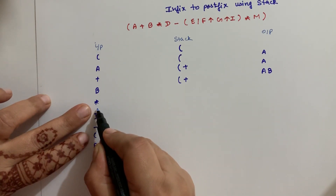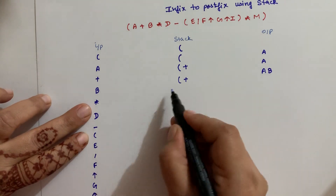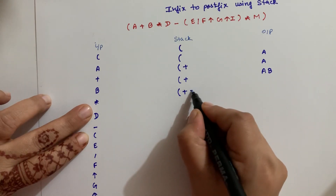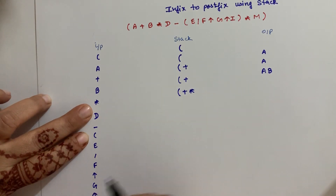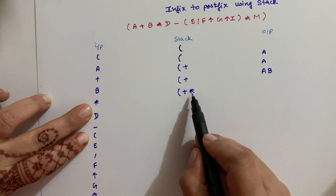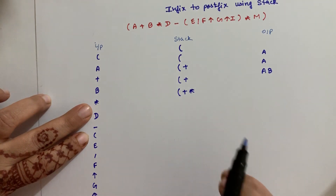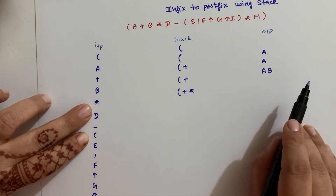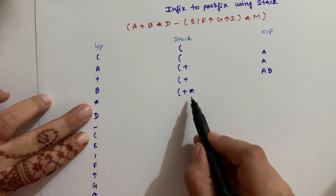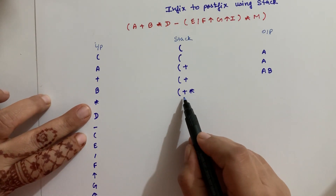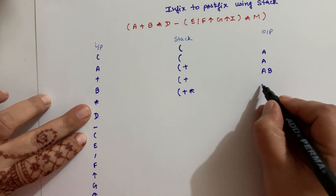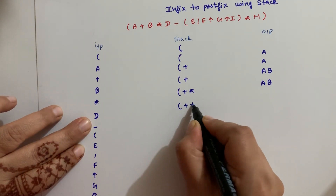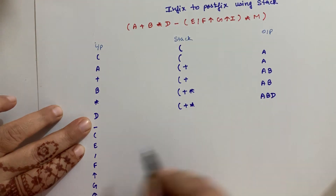Now another operator came — into (multiplication). What is inside the stack? Plus is there. The priority of into is greater than plus, so into will go to the top of the stack. It will not pop out. Our input operator's priority is greater than the top of the stack, so no pop out operation will happen and the values remain. Next is an operand (D), so the operand comes out to the output.